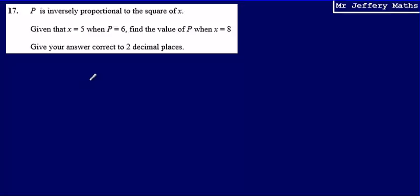This is question 17 from a series of videos taking a look at the NXL practice papers. Here we're told that P is inversely proportional to the square of X. Given that X equals 5 when P equals 6, find the value of P when X equals 8. Give your answer correct to two decimal places.